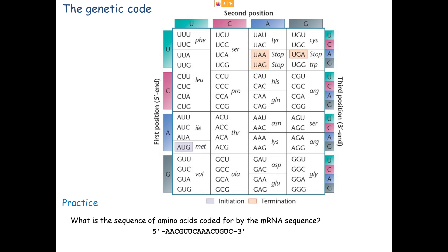The code is arranged in columns and rows where the first position is in each of the four rows — U, C, A, or G — and the second position is in the columns. For example, the second column all has C in the second position. The third row all has A in the first position. Each of those 16 blocks has all four possibilities in the third position listed: U, C, A, G. Your brain is good at picking out patterns — what do you see that stands out?